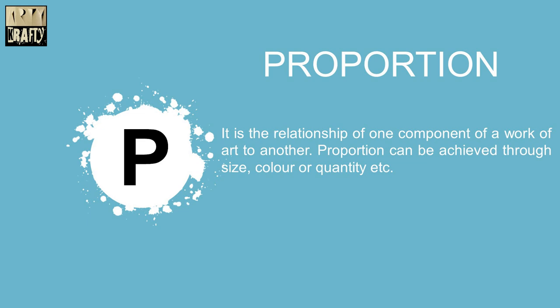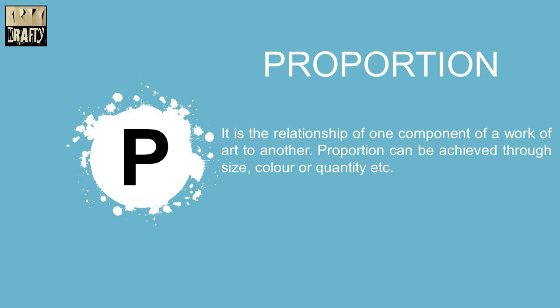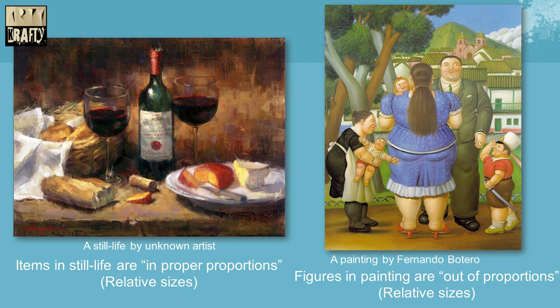Then, proportion. It is the relationship of one component of a work of art to another. Proportion can be achieved through size, color and quantity. In the first example of still life, all the elements or objects are in proper proportions. In the second painting by Fernando Botero, the figures are out of proportion.